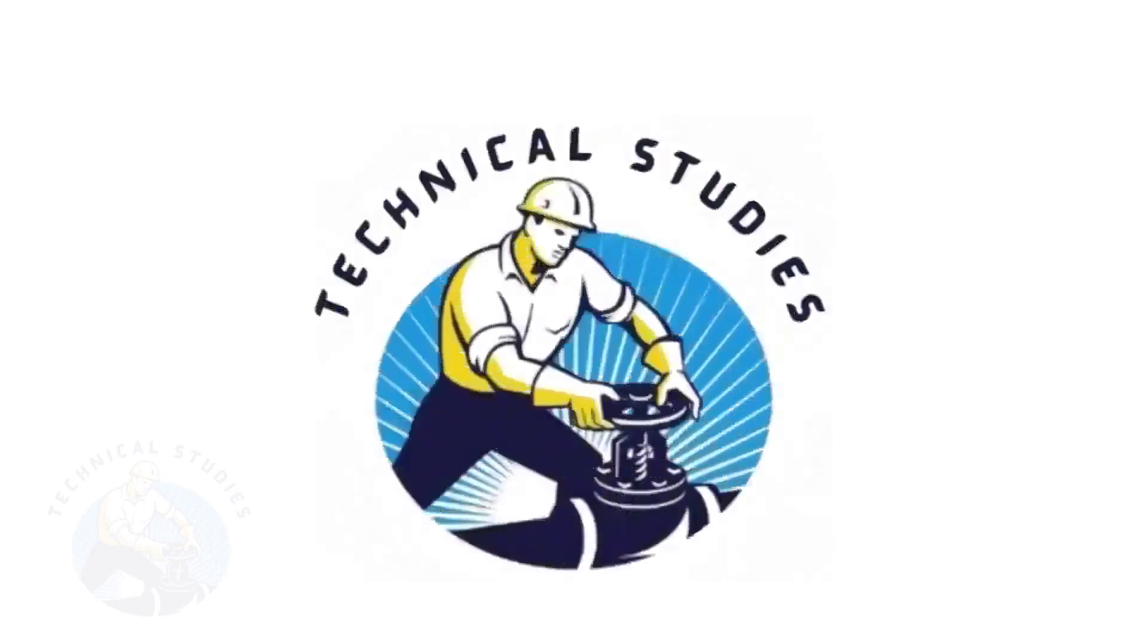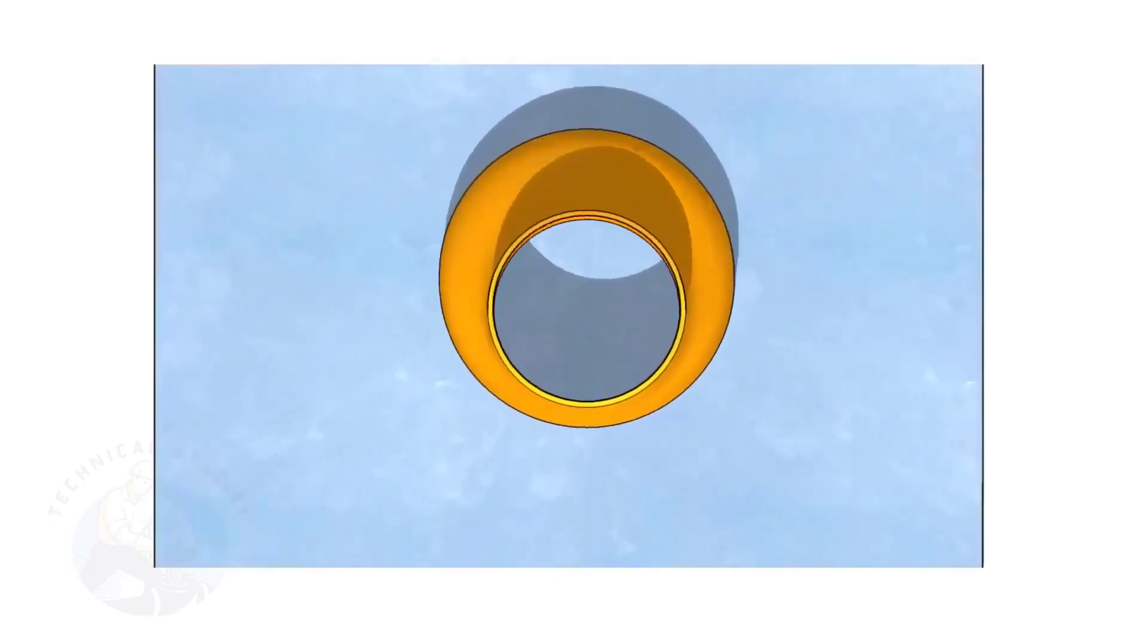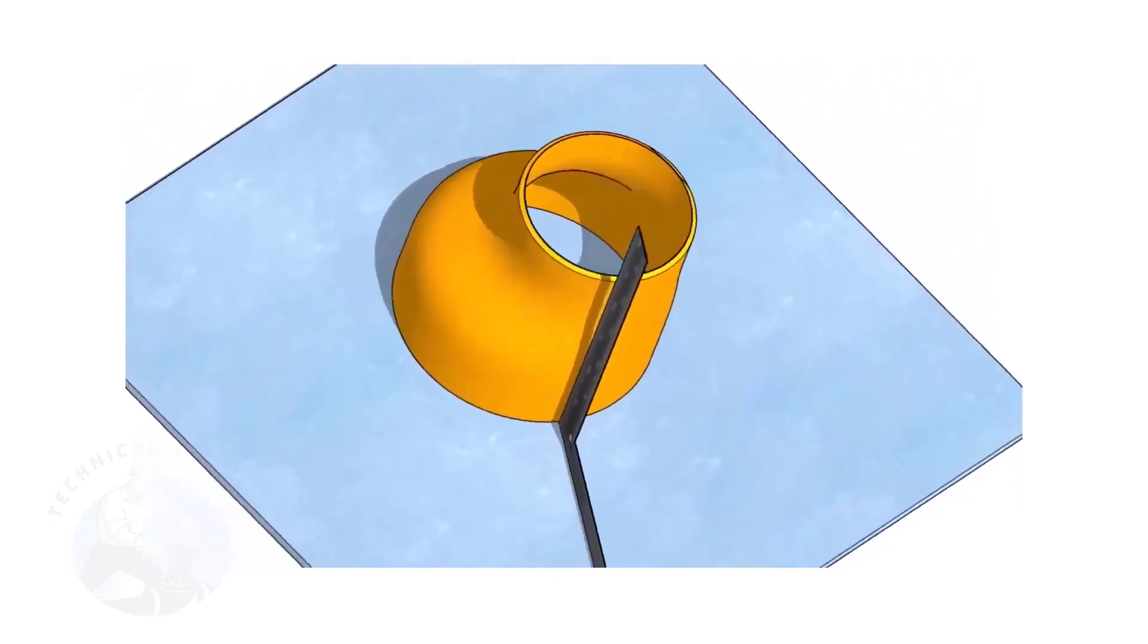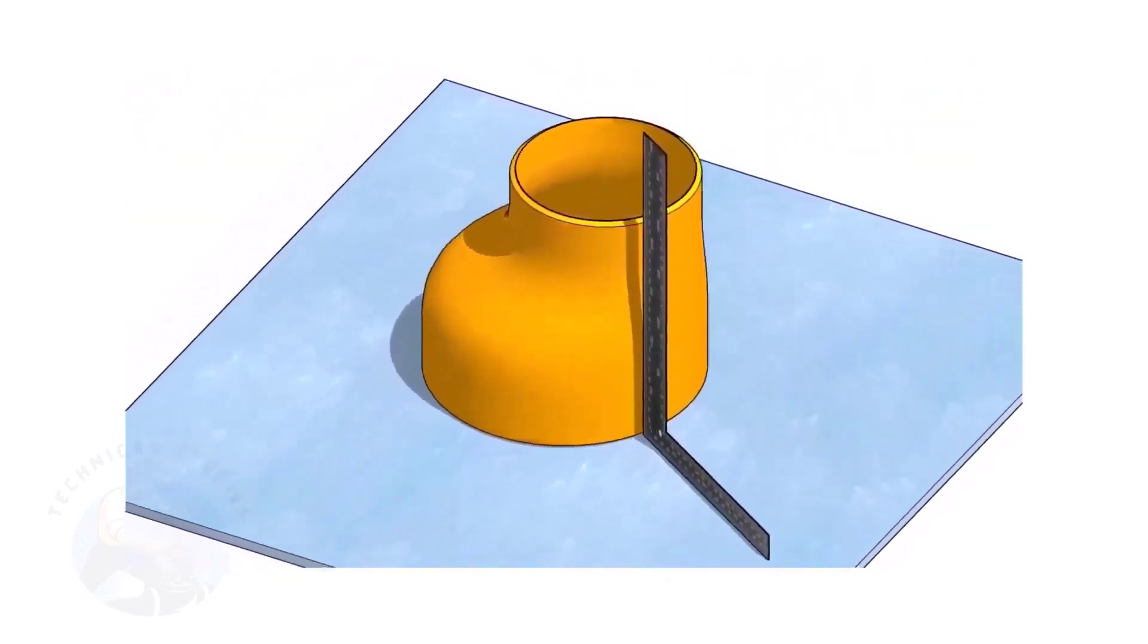Welcome to Technical Studies. Fitting an eccentric reducer to a pipe that is already fitted to another fitting like a flange, tee, elbow, etc. is a little tricky.